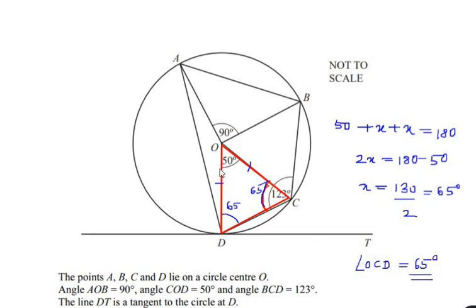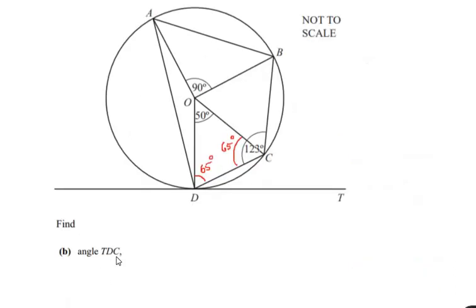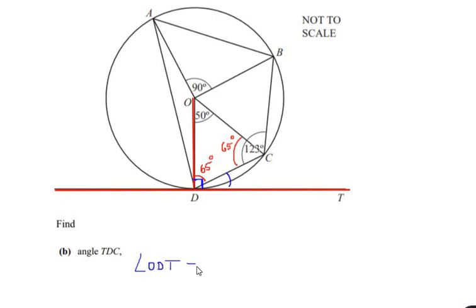Now let us consider the second part of this question: find angle TDC — so we have to find this small angle TDC. We know the property that a tangent always makes a 90 degree angle with the radius of a given circle. So here the line OD makes an angle of 90 degrees with the line TD, and angle ODT is made up of angle ODC plus angle TDC.